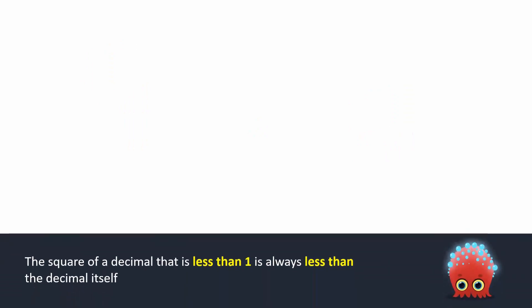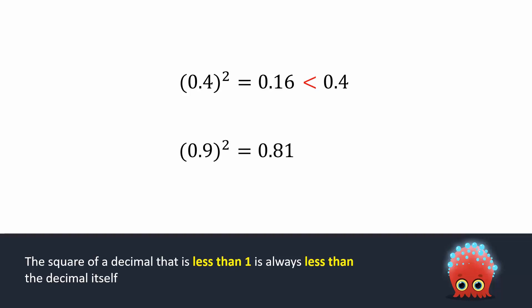In fact, all decimals that are less than 1 have a square that is less than the decimal itself. 0.4 squared is equal to 0.16, which is less than 0.4. The square of 0.9 is 0.81, which is again less than 0.9.